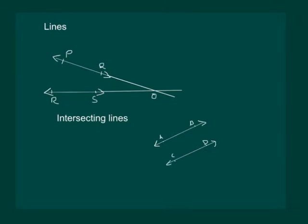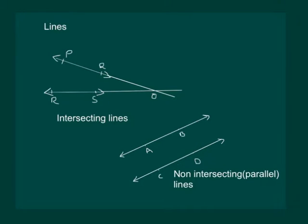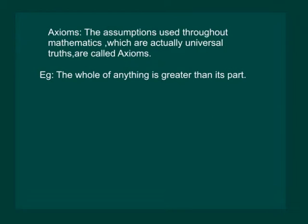We can also draw two different lines AB and CD in such a manner that they never intersect, however much we extend them in both directions. Such lines are called non-intersecting lines or parallel lines. Let us understand what are axioms.